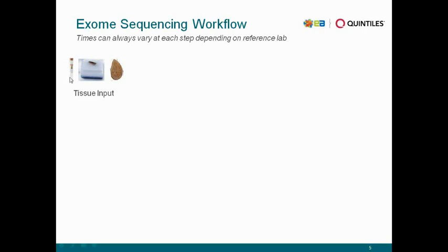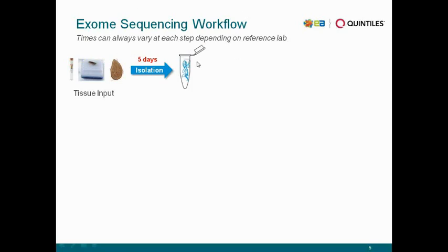Assuming you have tissue input — blood, tumor, FFPE, whole tumor — we do primarily a lot of oncology sequencing here, so that's what we have. Isolation, depending on the input material, can take around five days to actually get to the genomic DNA you need to start.